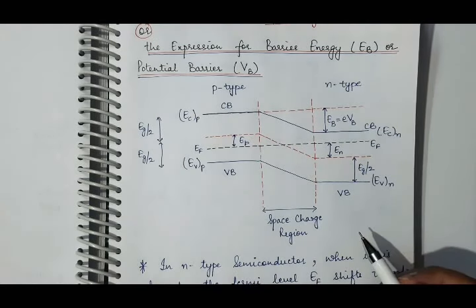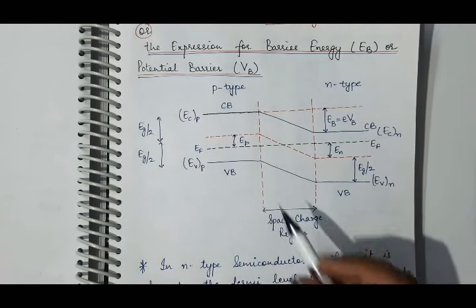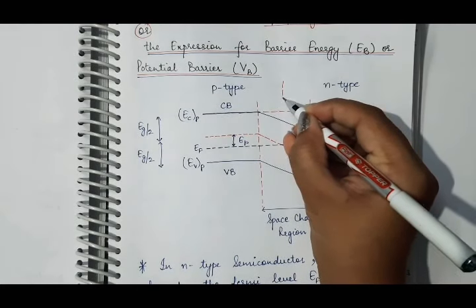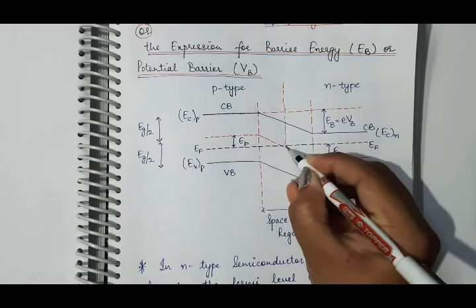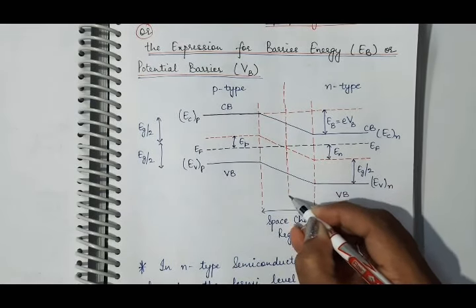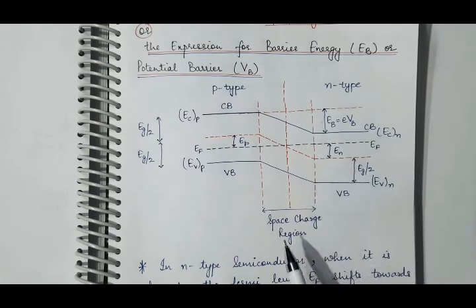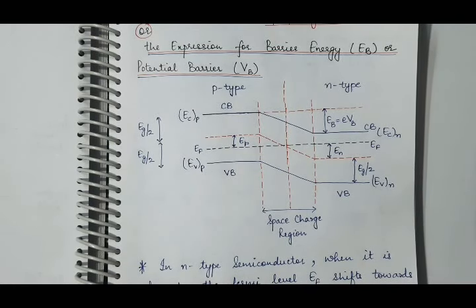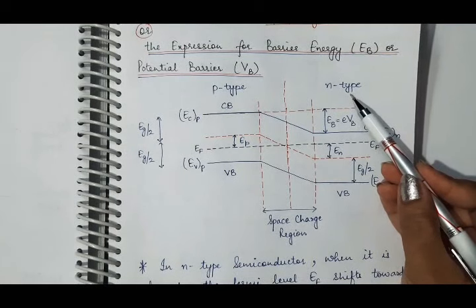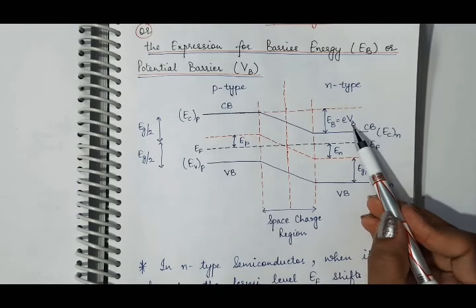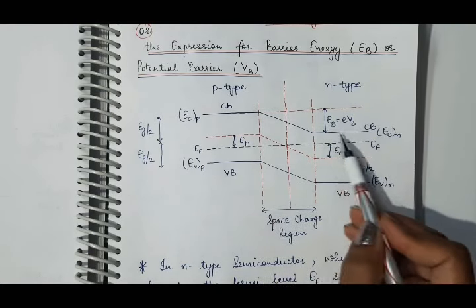In this energy band diagram, we have a semiconductor whose one side is P-type, the other side is N-type, and there is the P-N junction — the boundary which divides this P-side and N-side. This region is the depletion region or space charge region. When the P-N junction forms, the conduction and valence bands on the P-side raise themselves compared to those on the N-side, creating a potential difference Vb — known as the potential barrier — and a barrier energy Eb between the conduction bands on both sides.